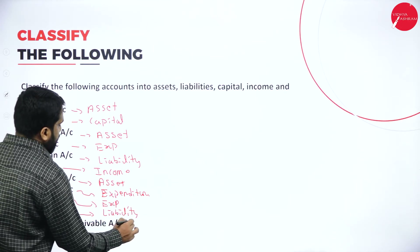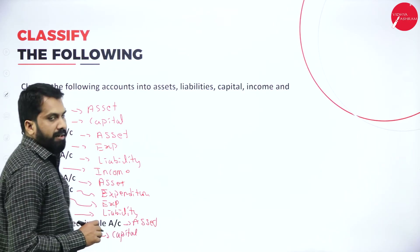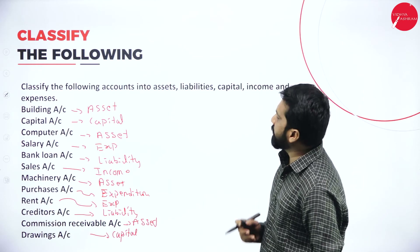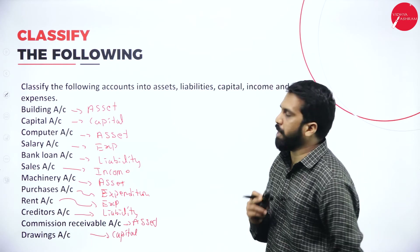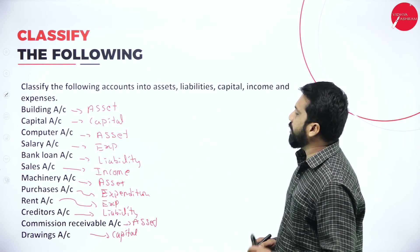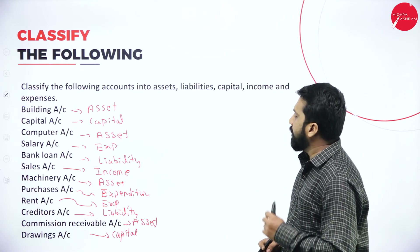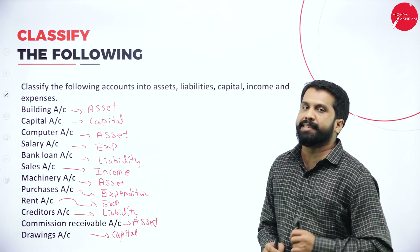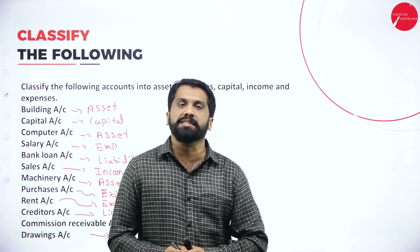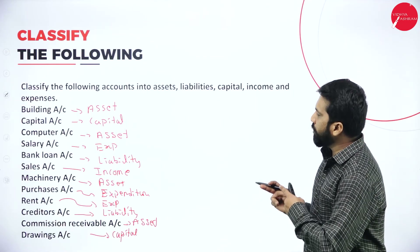Rent — expenses. Creditors — liability. Commission receivable — anything which is receivable is always an asset. Drawings — capital. If commission is payable, then it will be a liability — anything payable is a liability, anything receivable is an asset. For your homework, fill in all these items in the same table format. You can take a screenshot for reference.